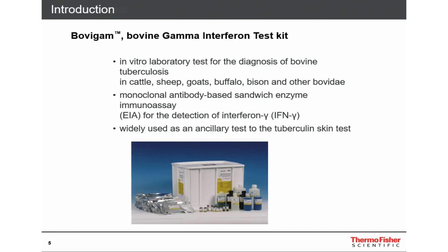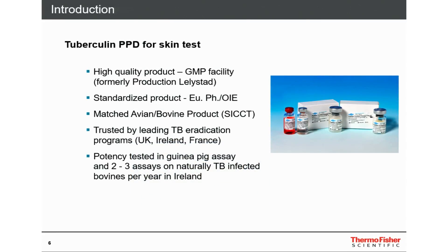It's widely used as an ancillary test to the tuberculin skin test. The tuberculin PPDs for skin tests are produced at the GMP facility in Lelystad. It's a standardized, matched avian-bovine product for the SICCT test, trusted in many countries for TB eradication programs like the UK, Ireland, and France. Before selling, it is potency-tested in a Guinea pig assay and two to three assays on naturally infected bovines per year in Ireland.